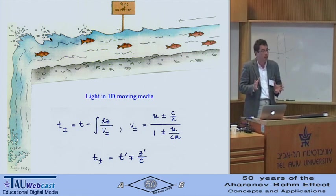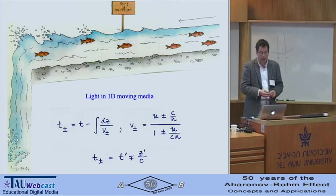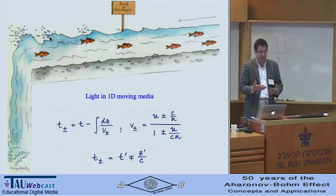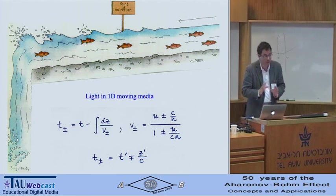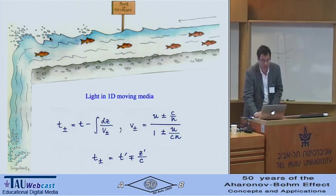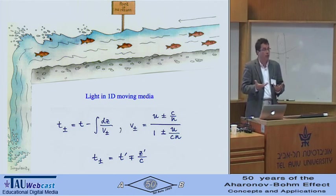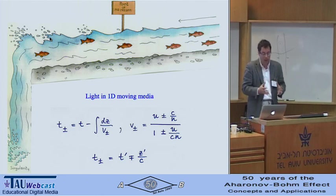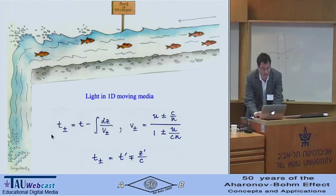That is a cartoon picture of a black hole horizon, but it is in fact quite an accurate description of it, and you can simulate it with light in moving media in one dimension. If you focus just on one-dimensional propagation, then it belongs to the same class of problems — transformations between space-time coordinates as shown in these formulas.